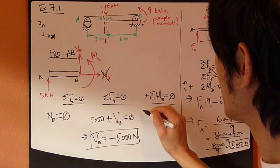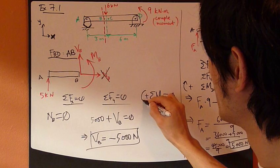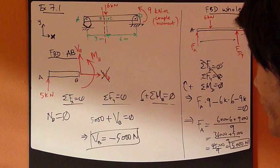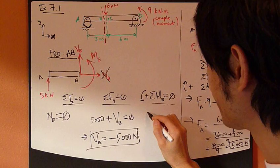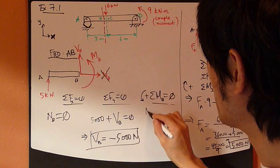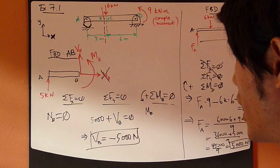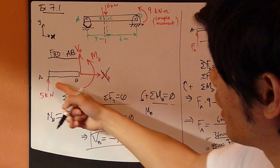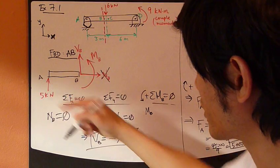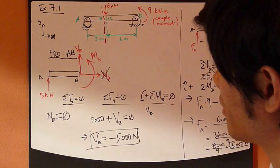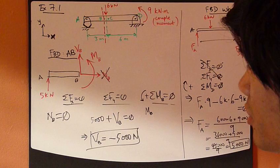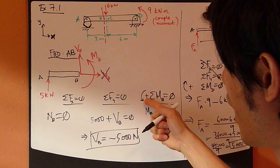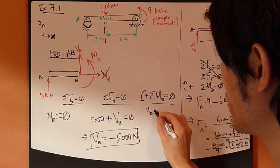I'm going to do counterclockwise positive, since I assumed this mb to be counterclockwise direction. So I have mb positive and a moment from this 5,000 newton force, and this force tends to create a clockwise direction, which is opposite to my positive direction, so it's negative.